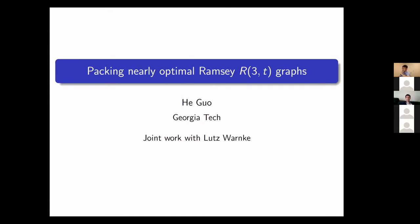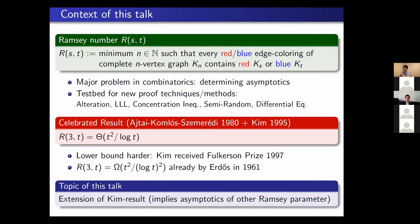This work is at the intersection of random graph processes and Ramsey theory. Let me begin with the definition of Ramsey numbers in the bicolor context. The Ramsey number R(s,t) is the minimum number n such that for every red-blue edge coloring of the complete graph K_n, it contains either a red K_s or blue K_t. A celebrated result in Ramsey theory is that the order of magnitude of the Ramsey number R(3,t) is t squared over log t.